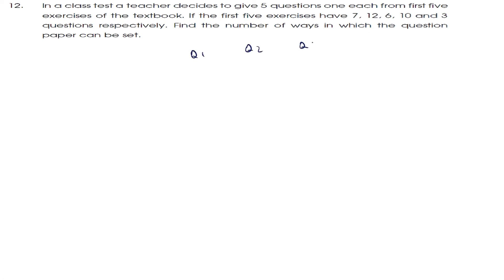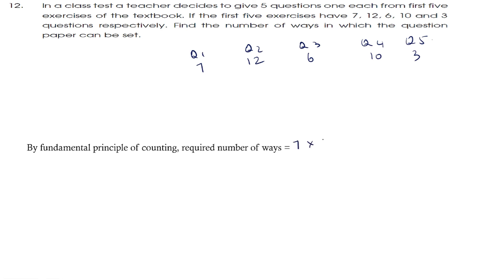Next question: in a class test, a teacher decides to give 5 questions, one each from the first 5 exercises of the textbook. The first 5 exercises have 7, 12, 6, 10 and 3 questions respectively. Find the number of ways in which the question paper can be set. Question 1 has 7 choices, question 2 has 12, question 3 has 6, question 4 has 10 and question 5 has 3. By the Fundamental Principle of Multiplication, the required number of ways is 7 into 12 into 6 into 10 into 3, which equals 15,120 ways.